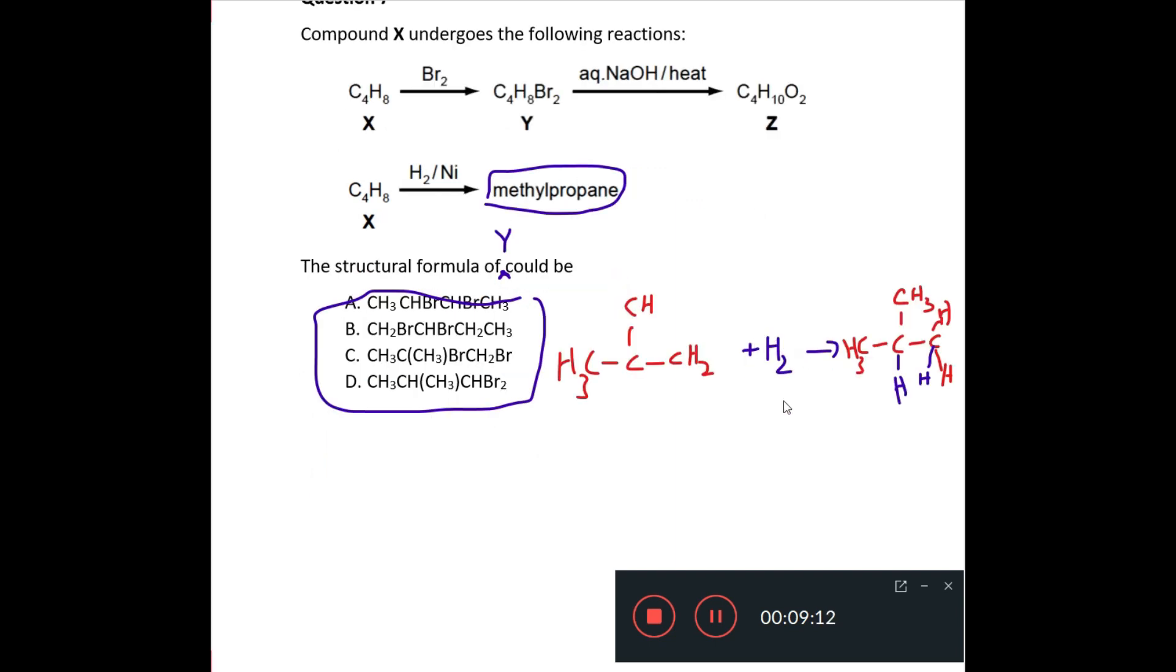Now, if we look at X reacting with hydrogen here, in the presence of nickel, it produces methylpropane. It's the same X. You've added hydrogen to a molecule and you get methylpropane. Now, if you consider what happens, the hydrogen adds across the double bond. So, if the structure looks like that, then the double bond must have been here. So, your original molecule must have been methylpropene.